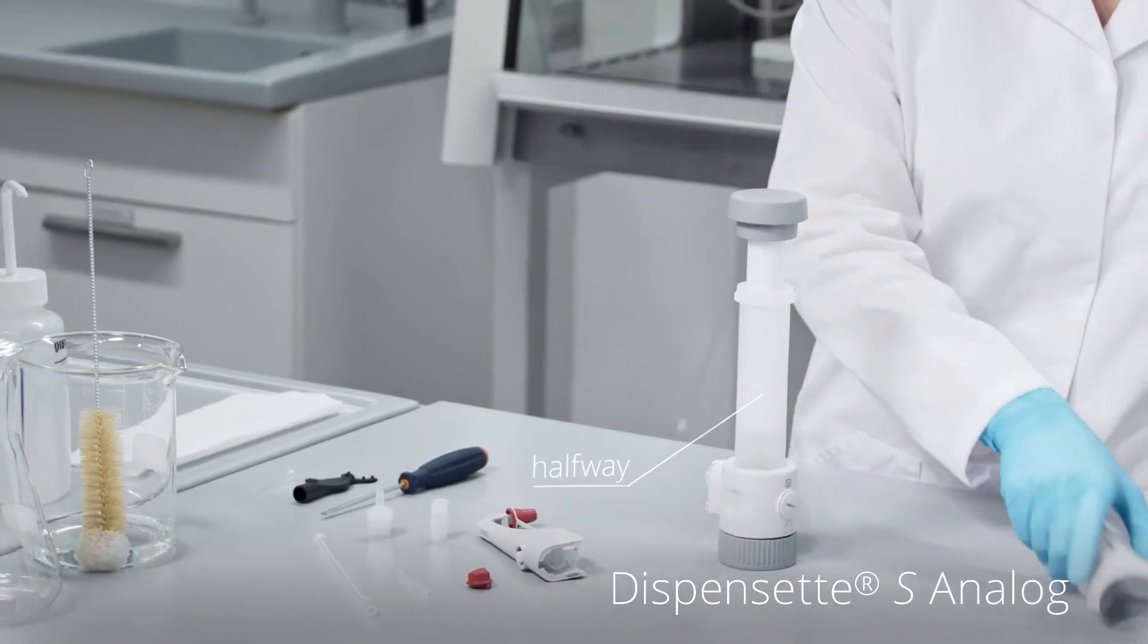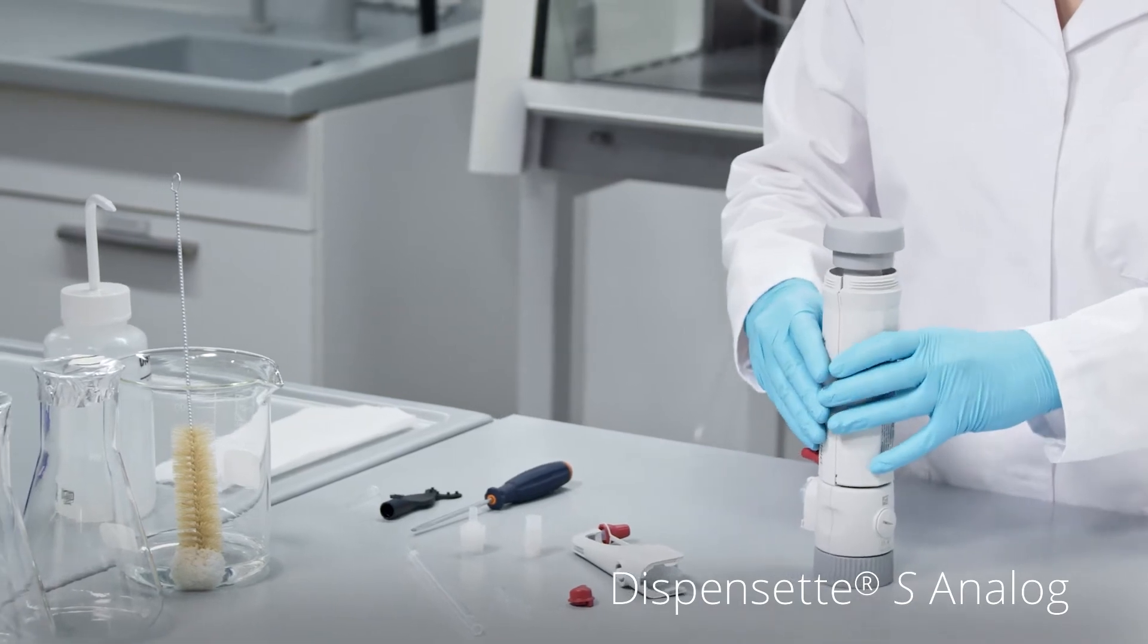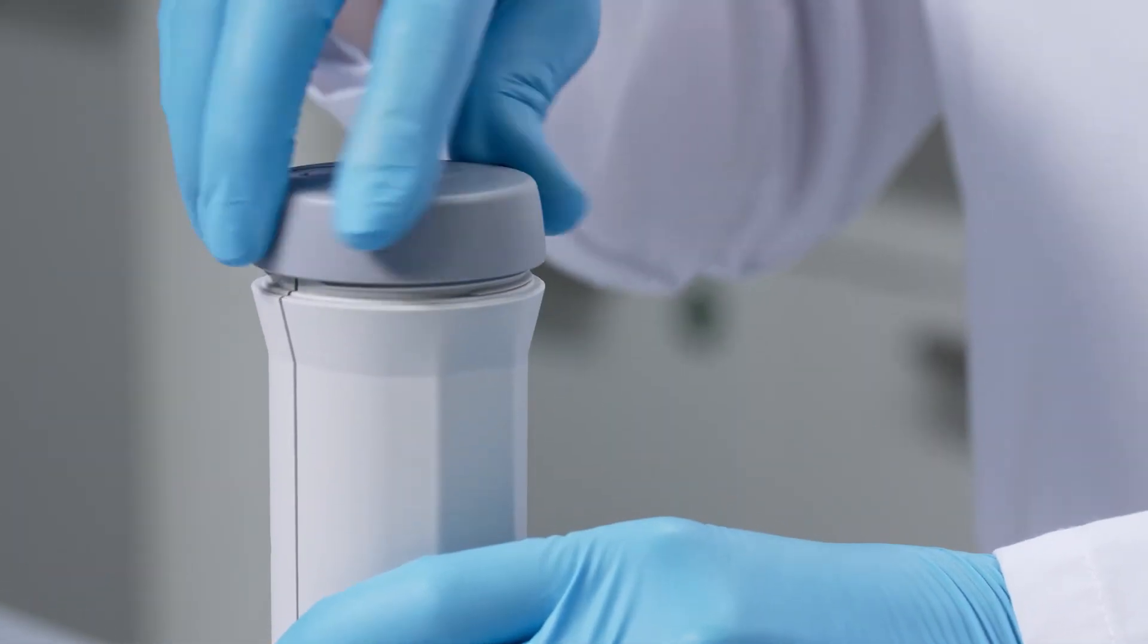For analog models, insert the piston halfway into the cylinder and reassemble the housing. Screw the piston seat into the housing.